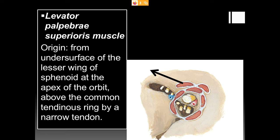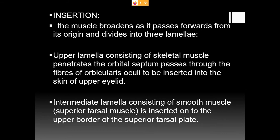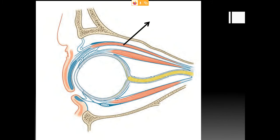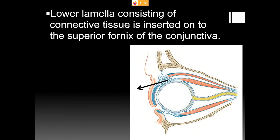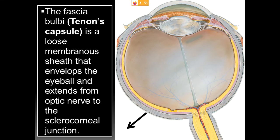The levator palpebrae superioris arises from the undersurface of the lesser wing of the sphenoid bone at the apex of the orbit, just above the common tendinous ring of Zinn, by a narrow tendon. It inserts by dividing into three lamellae: the upper lamella of skeletal muscle penetrates the orbital septum and inserts onto the skin of the upper eyelid; the intermediate lamella of smooth muscle (superior tarsus) inserts onto the upper border of the superior tarsal plate; and the lower lamella of connective tissue inserts onto the superior fornix of the conjunctiva.